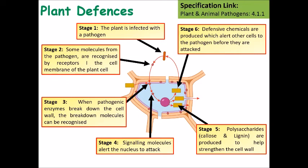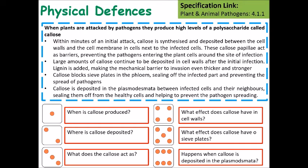Signaling molecules may also be produced that signal neighboring cells in the plant that they need to start preparing to stop themselves from being infected. High levels of the polysaccharide callose are produced — within minutes of an initial attack, callose is synthesized and deposited between the cell walls and the cell membranes in the cells next to the infected area. These callose deposits act like barriers preventing the pathogens from entering the surrounding plant cells.